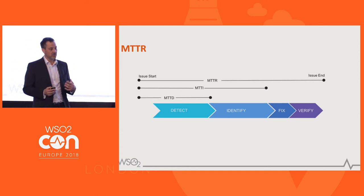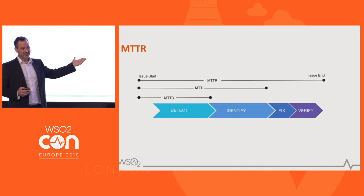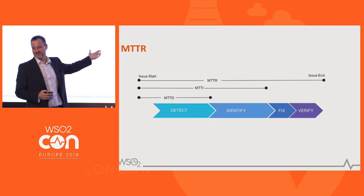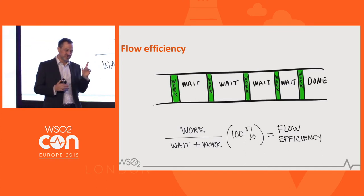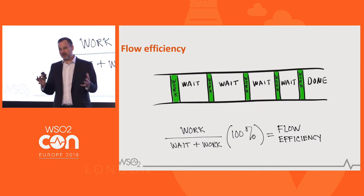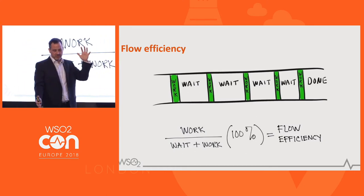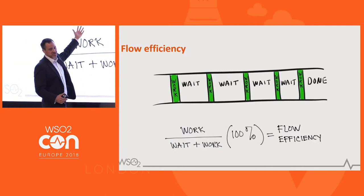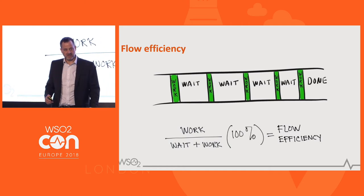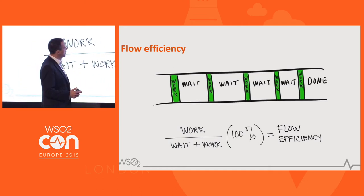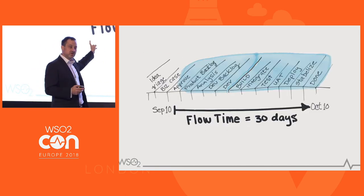Blue, green, and rainbow deployments are really important. We have SLAs on how long it will take to fix things, and we have to stick to them. There's also flow efficiency: if your team is waiting on other teams, your flow efficiency just drops — you spend the whole time waiting. Fundamentally, what I've been talking about is how we shrink those wait times, how we increase flow efficiency. If we increase flow efficiency, we can reduce flow time.